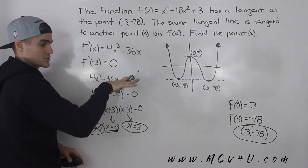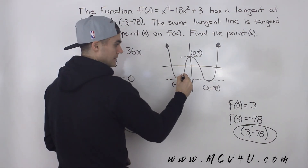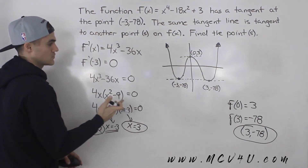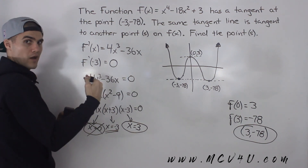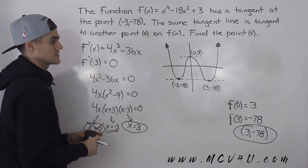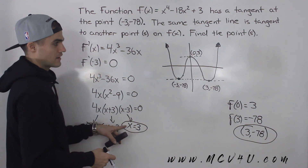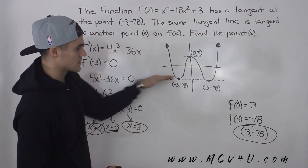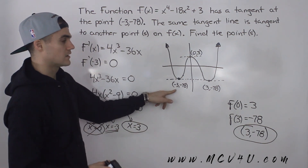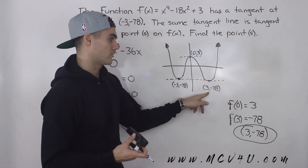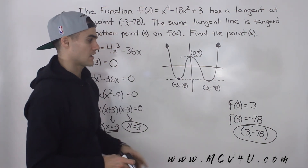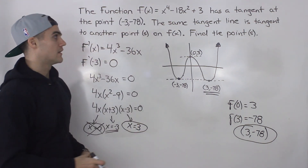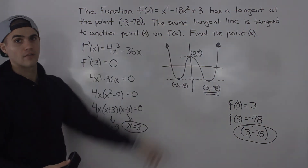Because we're dealing with a horizontal line, the y-values must be the same for it to be the same tangent line. If the line had a nonzero slope, the y-values could potentially differ. But for a horizontal line, they must match. When we plugged in x = 3, we got y = -78, confirming that the horizontal tangent at (-3, -78) is also tangent at (3, -78). That is the final answer — the only other point on the function with that same tangent line.